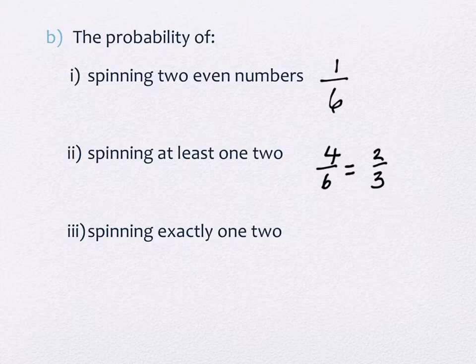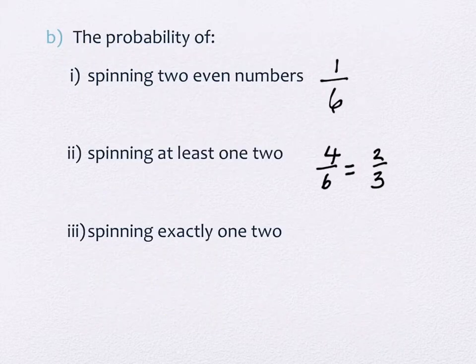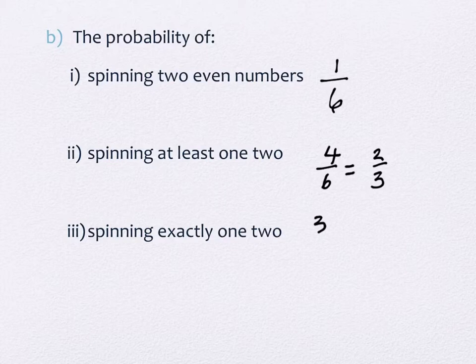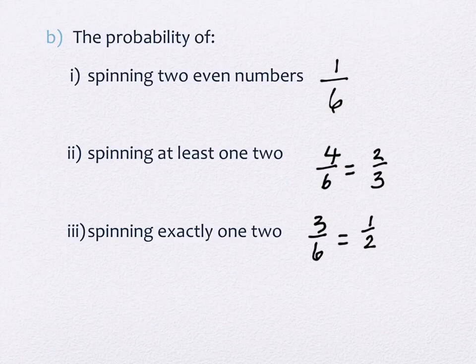And the last one says spinning exactly 1, 2. So where are the exactly 1, 2s? There's three of them. So I have 2, 1 and 1, 2 and 2, 3. So there are 3 out of 6, which reduces to 1 half of my numbers where I have exactly 1, 2 spun. And we will push pause right there for today.